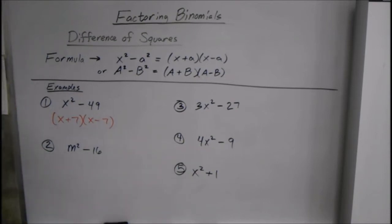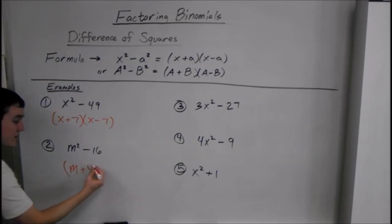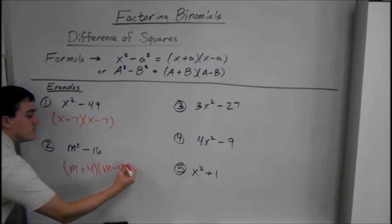m squared minus 16. The square root of m squared is m plus the square root of 16 is 4. So we have m plus 4 and m minus 4. Simple as that.